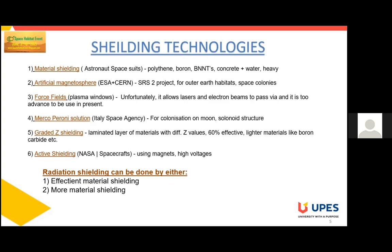Next is the artificial magnetosphere. Generated largely from deep within the planet, the magnetic field can be thought of as a huge bubble protecting us from cosmic radiation and charged particles that bombard Earth in solar winds. The SR2 project uses superconducting wire made up of magnesium diboride, coiled up by running electricity through the coil, and it should be capable of producing a magnetic field 3,000 times stronger than Earth's.